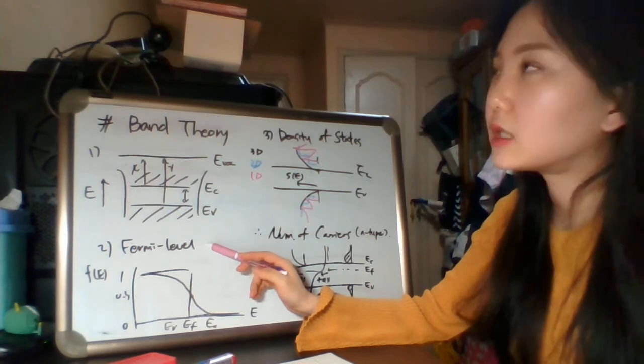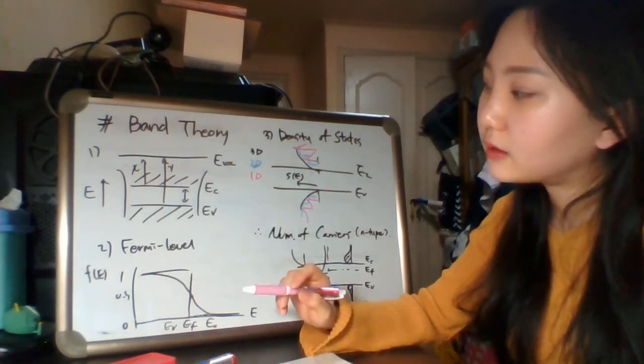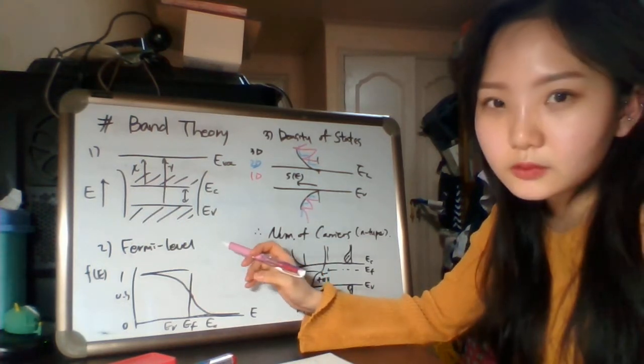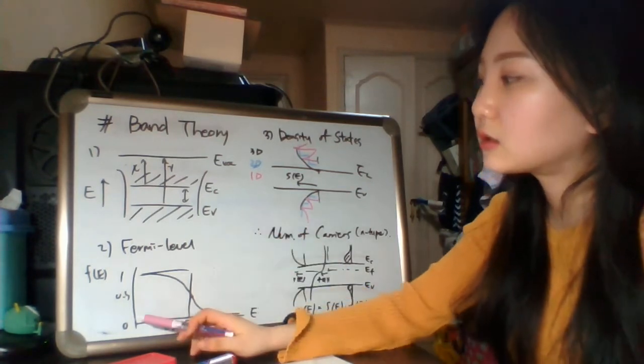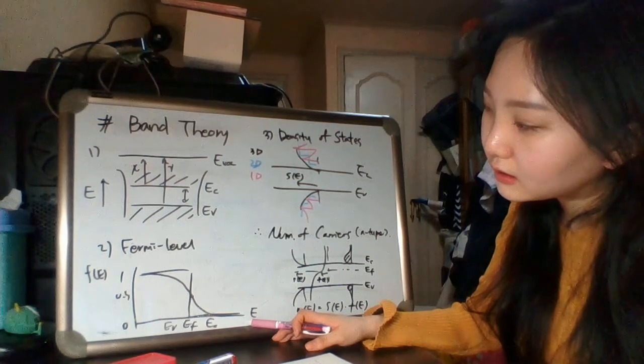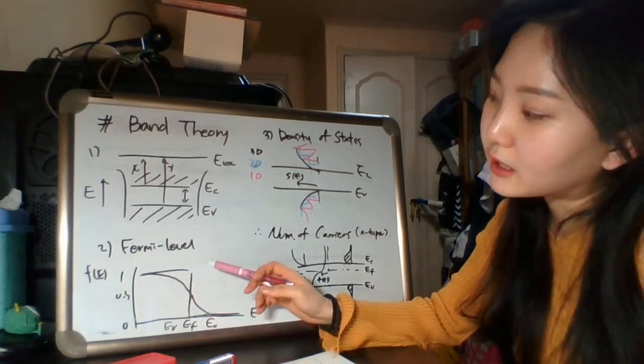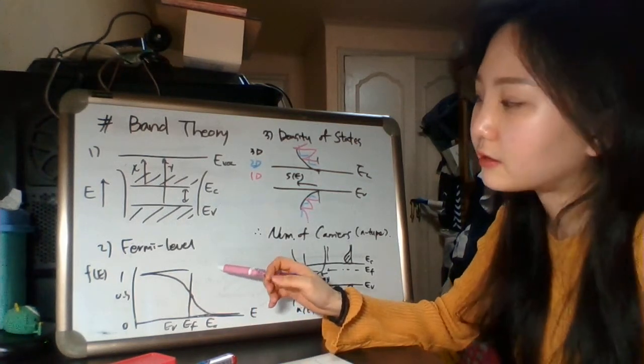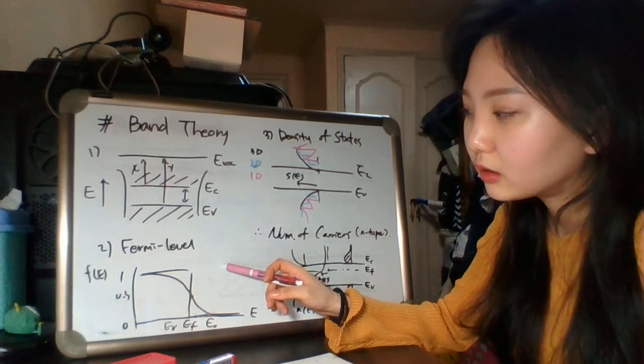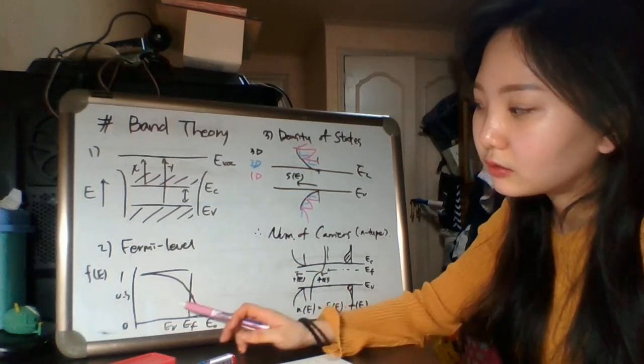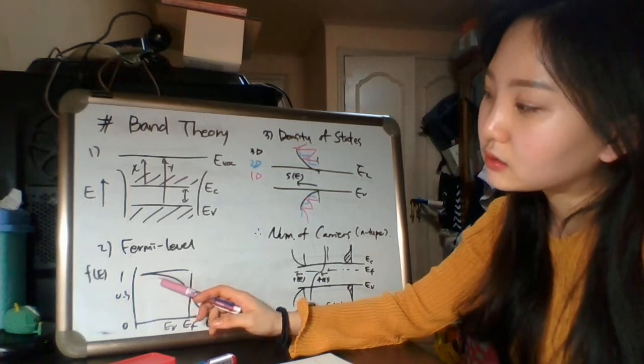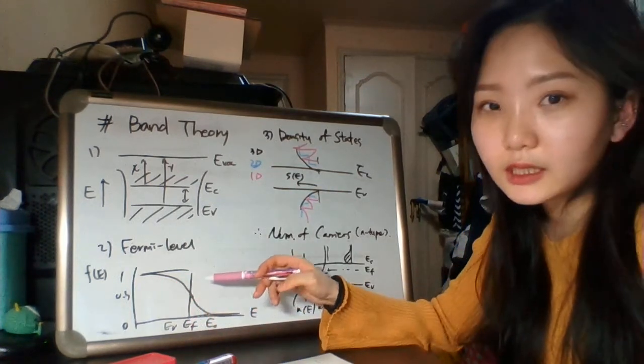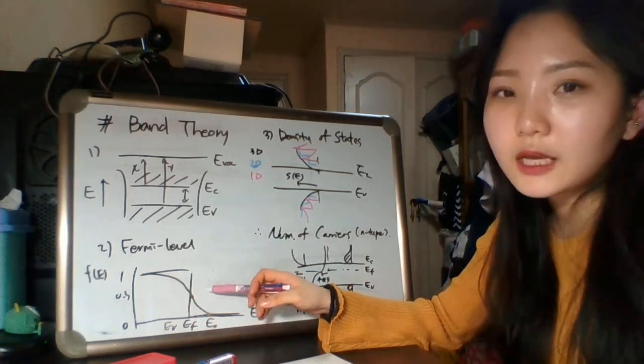Fermi level is the level electron exists 50%. I draw this graph and it looks like unit function at zero Kelvin. But we can see the slope goes smoothly at the higher temperature.